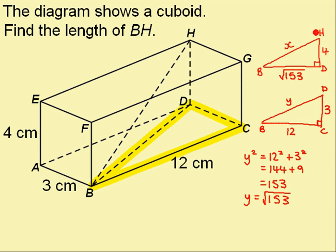Now I can use Pythagoras on this triangle to find the length that I was looking for. So using Pythagoras, I have x squared equals this squared. And now you can see why I've left it as root 153 because I've got root 153 squared, and we know that the answer to that is going to be 153 plus 4 squared.